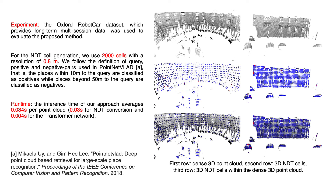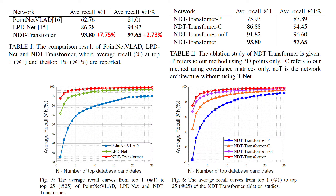The inference time of our approach averages 34 ms per point cloud, in which 30 ms is used for NDT conversion and 4 ms for the transformer network. Compared to the state-of-the-art, our approach achieves an improvement of 7.52% on average top-1 recall and 2.73% on average top-1% recall. We compared our approach with PointNetVLAD and LPD-Net, and ablation studies are also provided.